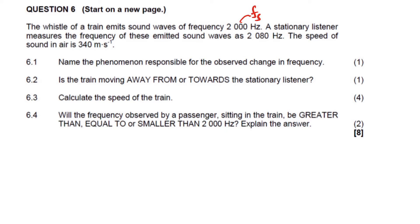Now it says here a stationary listener, that means the listener's velocity is zero, right? A stationary listener measures a frequency of these emitted sound waves of 2,080 hertz. So this is the frequency of the listener. This is the one that is observed by the stationary listener. Now it says the speed of the sound in the air is 340. This is just V.